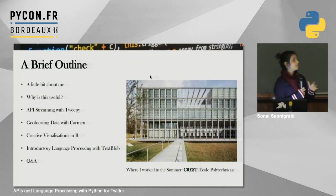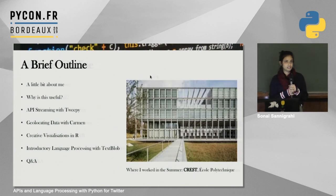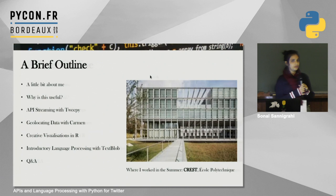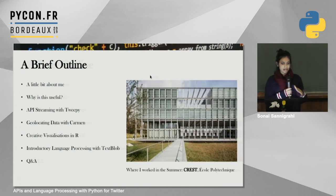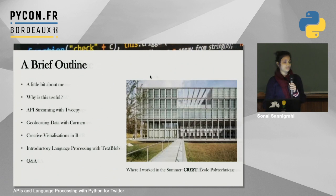Here's a brief outline of the presentation. I'm going to first talk about me and why I'm interested in this topic, and why you should be interested in it. Then I'll move on to API streaming using Tweepy, a Python library for the Twitter API. Next, I'll talk about geolocating data using Carmen, another Python library, and how to represent this data using R. Lastly, I'll cover some introductory language processing using TextBlob, followed by questions and answers.